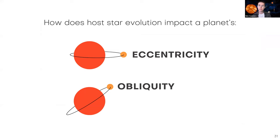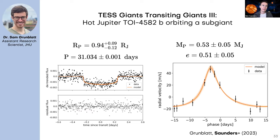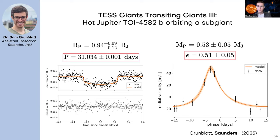Specifically, I'll be talking about the eccentricity and obliquity of some discovered exoplanets. Starting with eccentricity — this work was led mostly by Dr. Sam Grunblatt, a research scientist at Johns Hopkins. One of the papers in our Giants Transiting Giants Survey shows a highly eccentric hot Jupiter orbiting a subgiant star. The phase-folded TESS photometry on the left shows the transit model, and the radial velocity signal on the right shows a peak instead of a smooth sinusoidal curve, indicating a highly eccentric orbit. This is a longer-period giant planet, and it's more eccentric than most of the things we see around evolved stars.